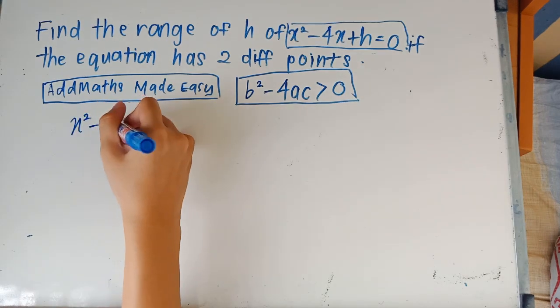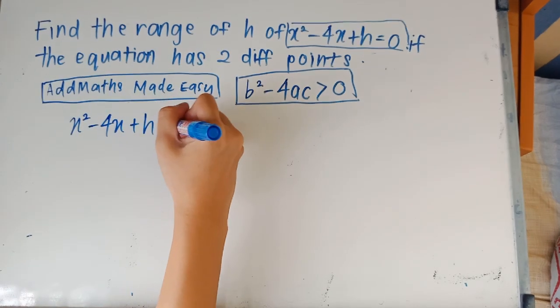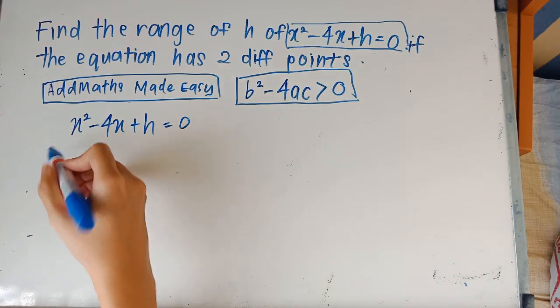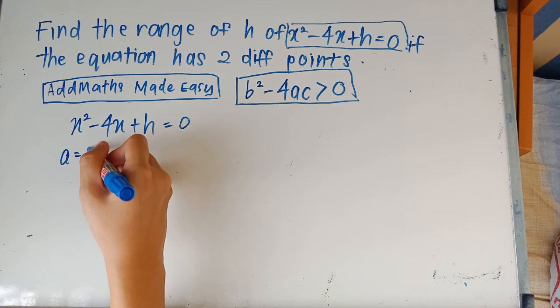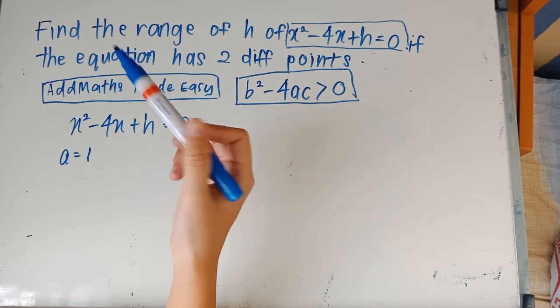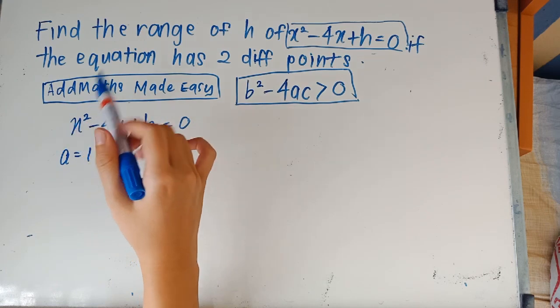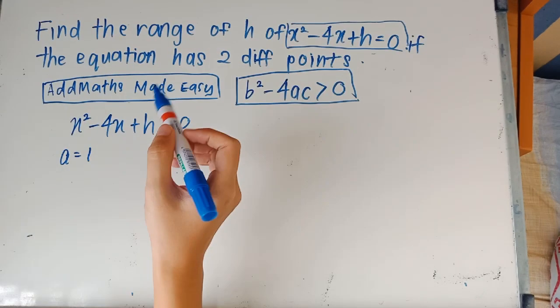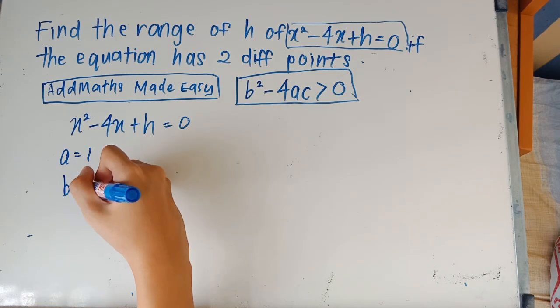X squared minus 4x plus h equals to zero. So from here the a value is actually one in front of x. There is nothing which means that there is always a one if it's just a single x, there's always a one in front of x. This is what you have to remember. And then b here would be the value in front of x which is negative four.